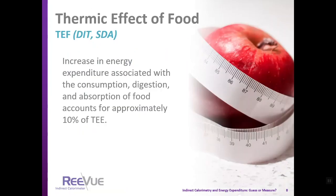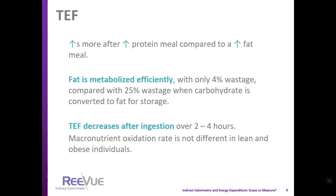The next component of energy expenditure is the thermic effect of food, called TEF. It could also be called diet-induced thermogenesis or specific dynamic action — all definitions of the increase in energy expenditure associated with the consumption, digestion, and absorption of food. This accounts for up to 10% of total energy expenditure, ranging from as low as 6% to as high as 10%.